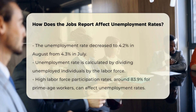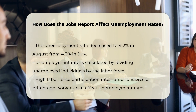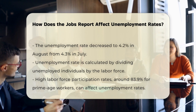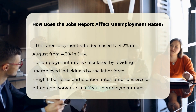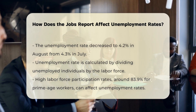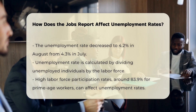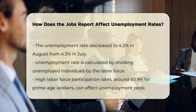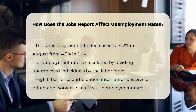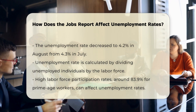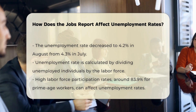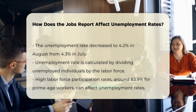Labor force participation. The unemployment rate is calculated by dividing the number of unemployed people by the number of people in the labor force — those who are currently working or looking for work — and then multiplying by 100. For instance, if the labor force participation rate remains high, as it has been at around 83.9% for prime age workers, it can affect the overall unemployment rate.